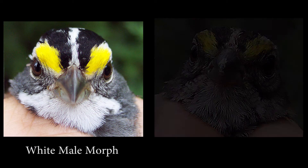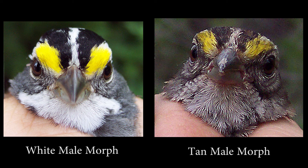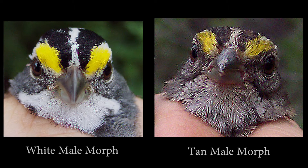The supergene is very large and covers over 100 megabases — 100 million bases. The fact that we have a white morph supergene and a tan morph supergene in one species makes the white-throated sparrow a unique model for studying complex gene-behavior relationships.